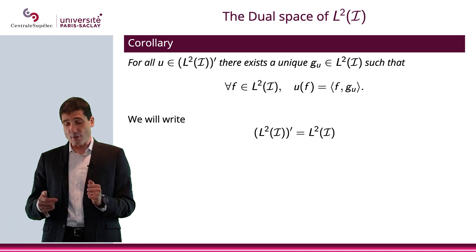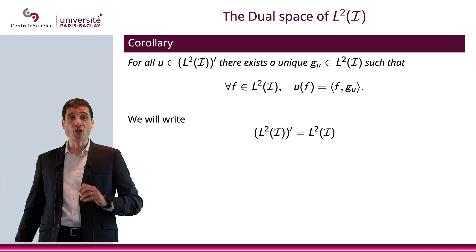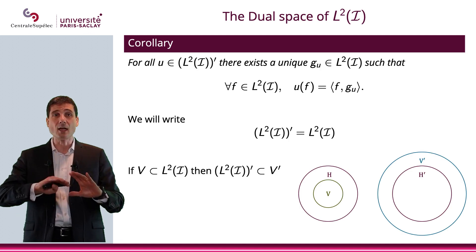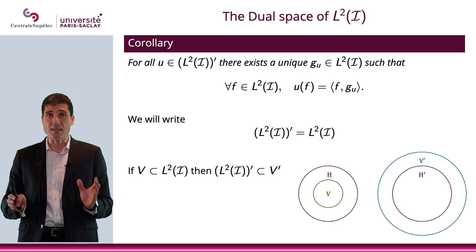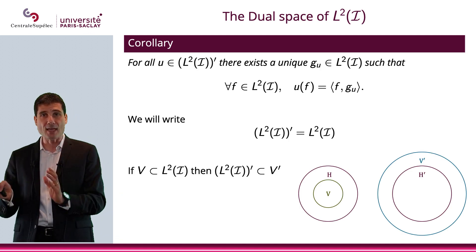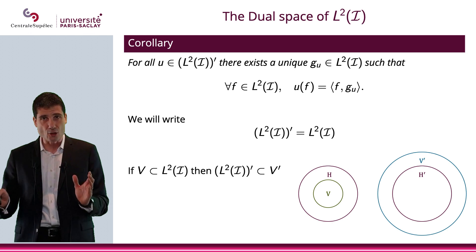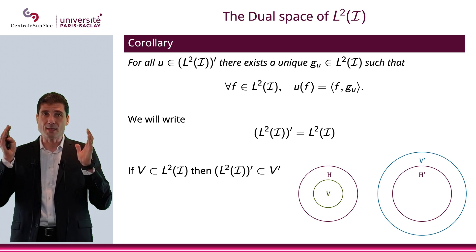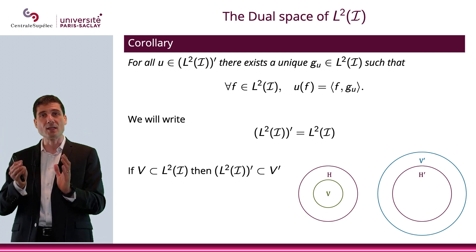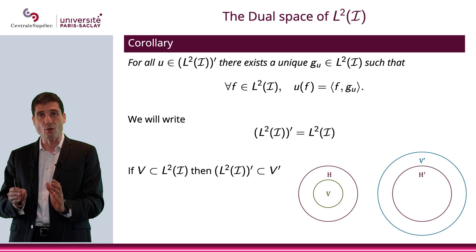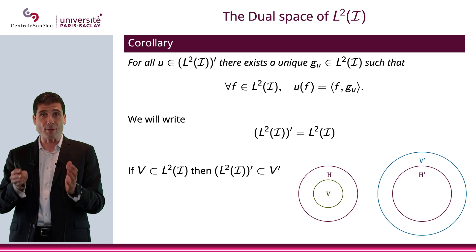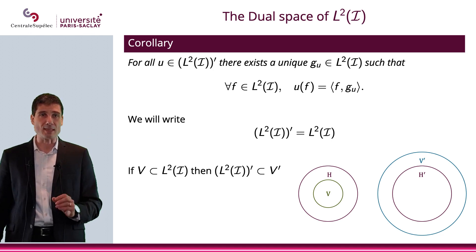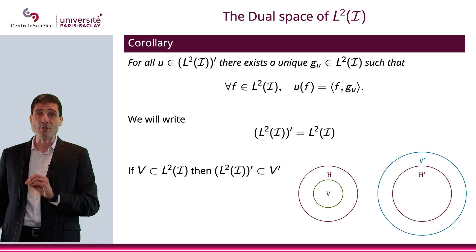Now, what happens if I have a subspace of L2? It's not just any subspace — it's going to be a Banach subspace, which is going to be a linear space. Let's say that V is included in L2 with these properties: it has to be a Banach space and it has to be a linear space.